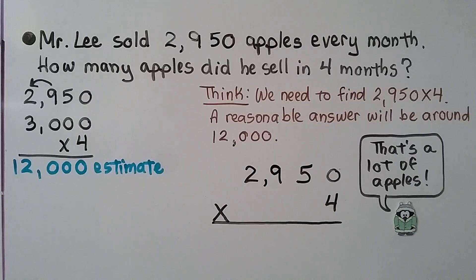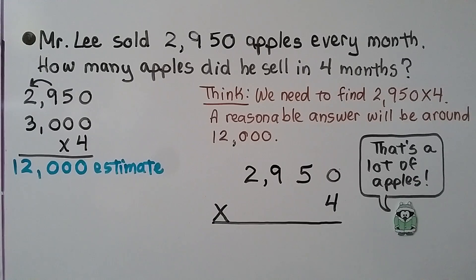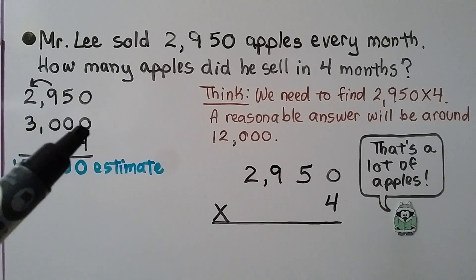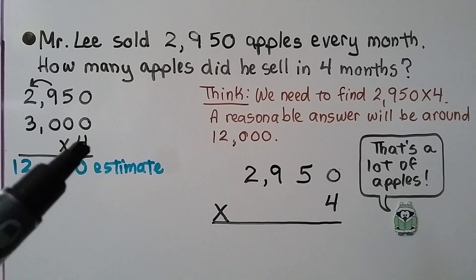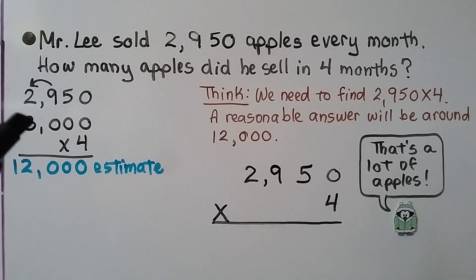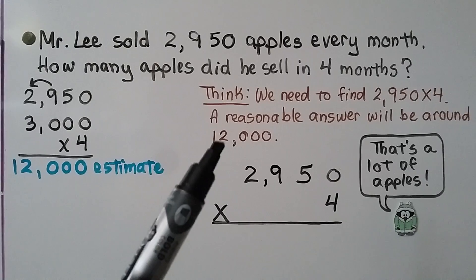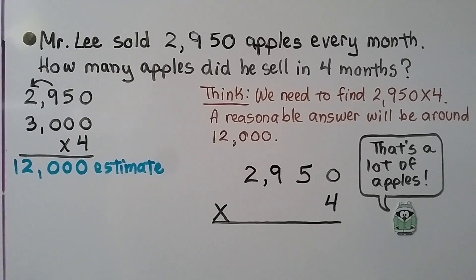Mr. Lee sold 2,950 apples every month. How many apples did he sell in four months? We need to find 2,950 times four. We can make an estimate so we know if our answer will be reasonable. The nine tells the two to go up to a three, then they all become zeros. We multiply four times 3,000 — that's the basic fact four times three, which is 12, with three zeros. So our estimate is 12,000, and a reasonable answer will be around 12,000.